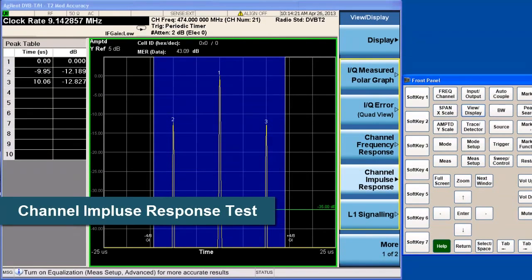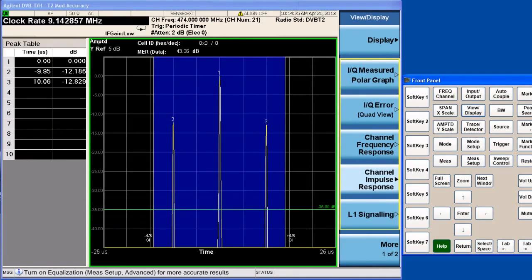Next, let's take a look at the channel impulse response test, which can be used to measure echoes in a single frequency network. Signals with pre-echo and post-echo are measured here.